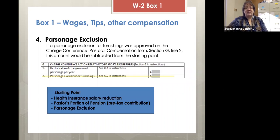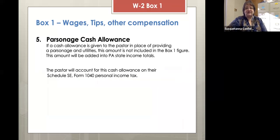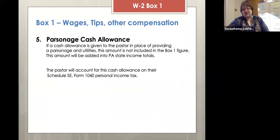If you look at the charge conference pastoral compensation form in section G, line two gives a place where a parsonage exclusion for furnishings can be selected and an amount declared. If this was agreed upon for your pastor, that can also be subtracted from wages reported in box one of the W-2. If your church gives your pastor a cash allowance for parsonage instead of providing a parsonage and utilities, that amount is not included in box one.